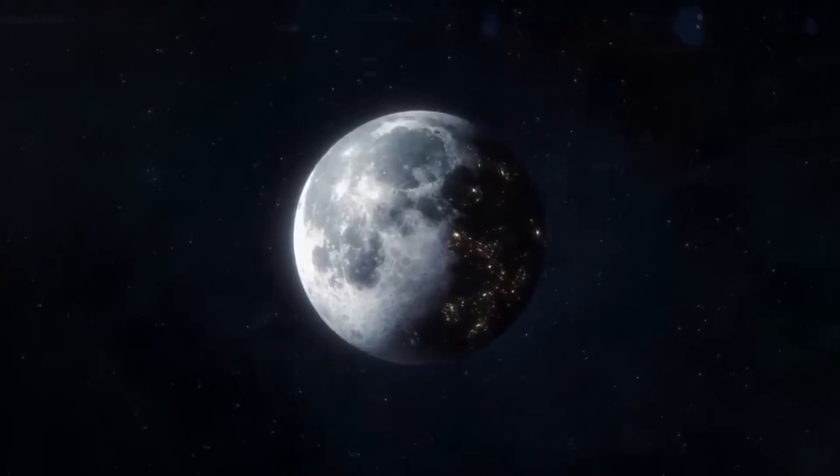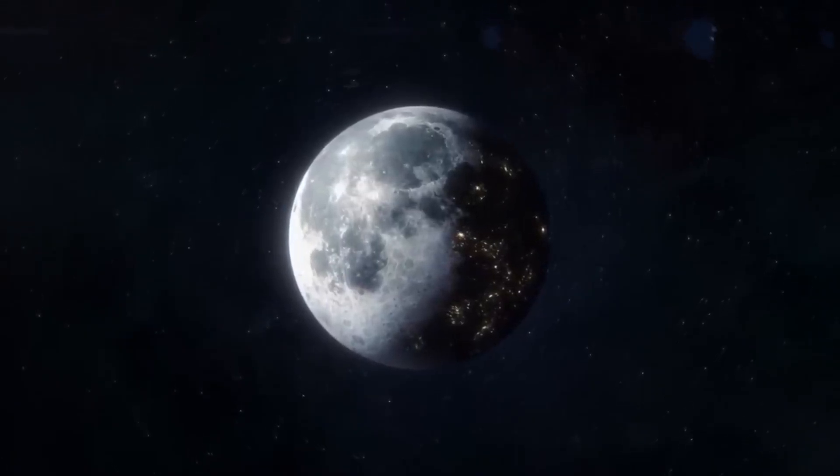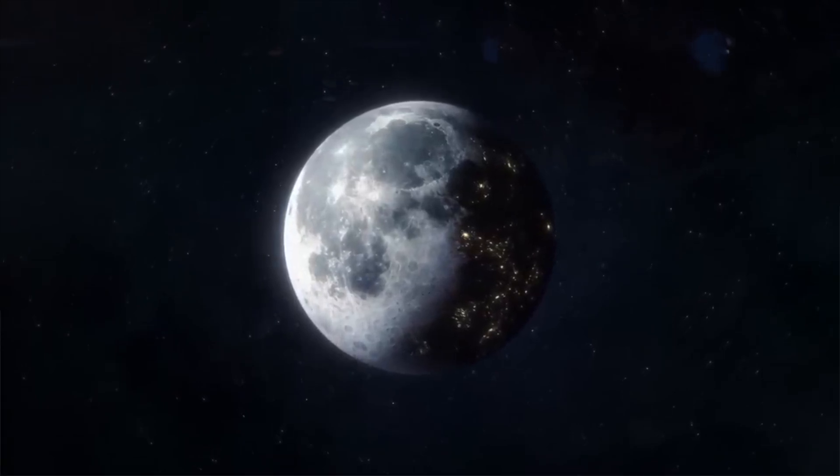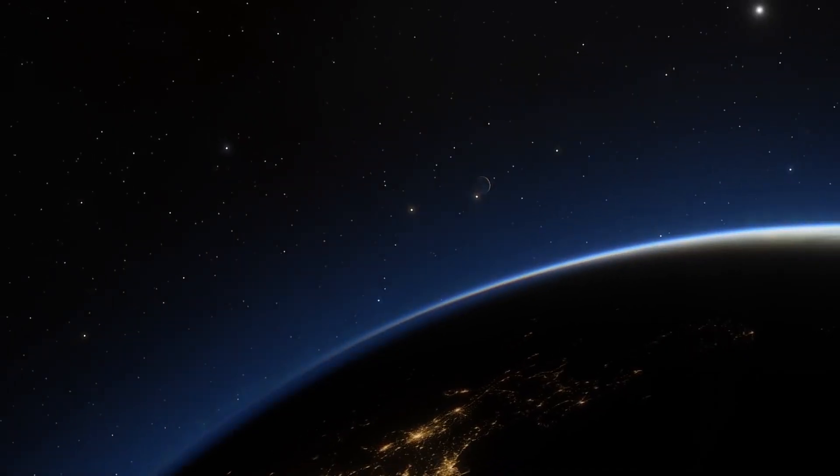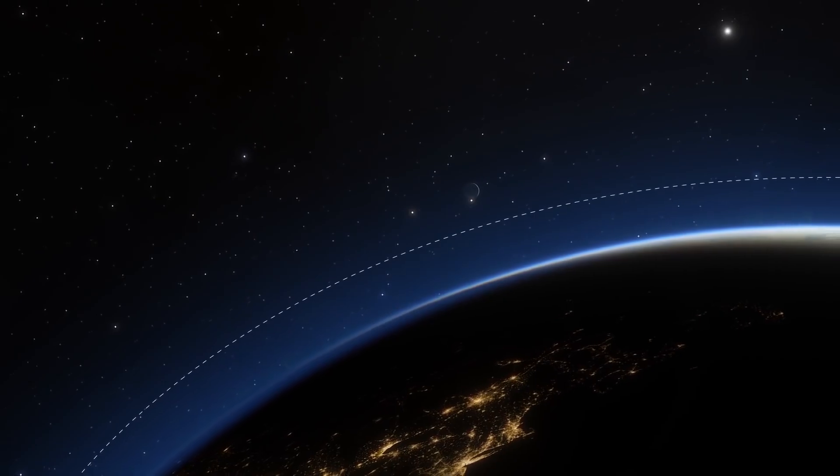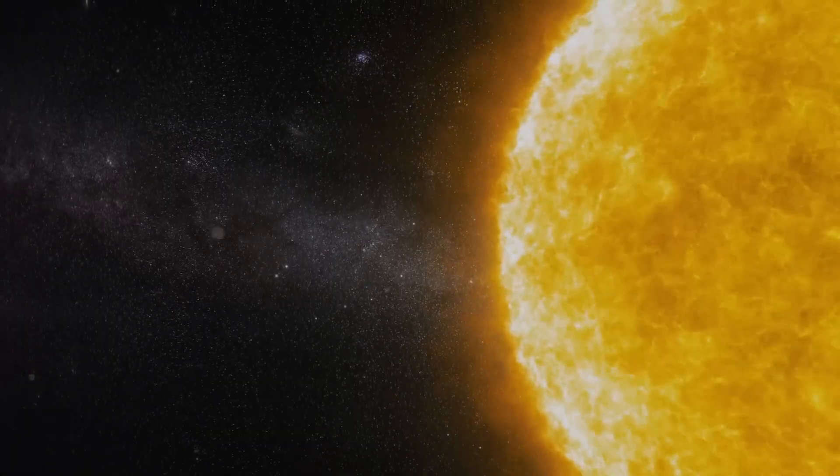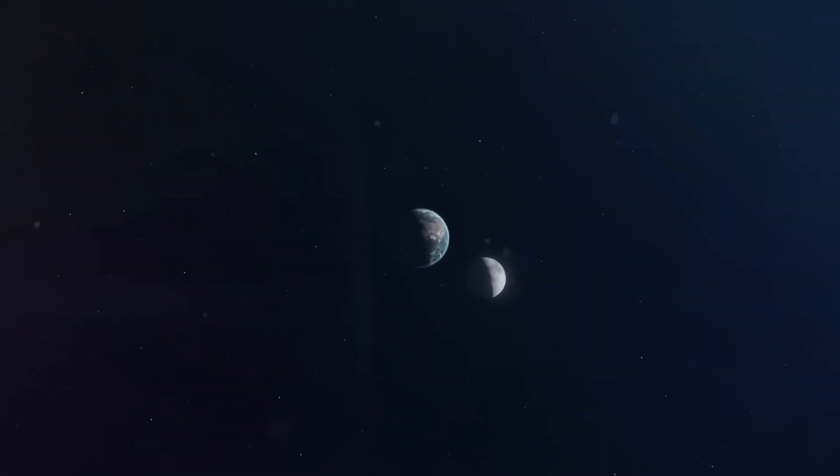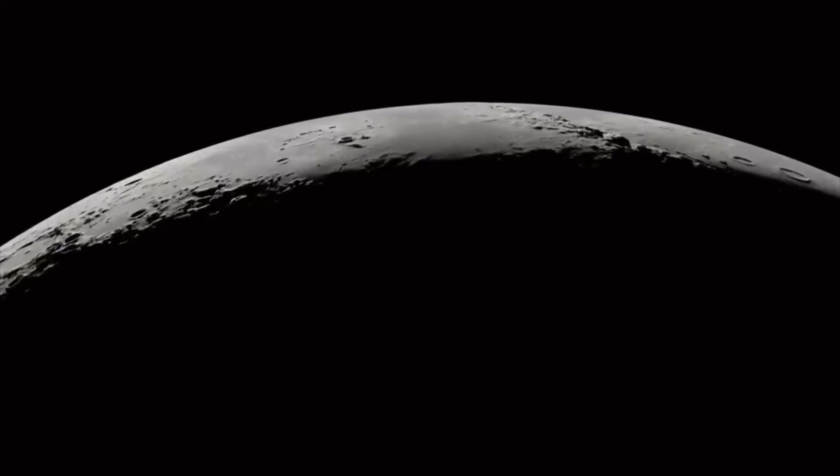And the Moon is slowly drifting away from Earth at a rate of about 1.5 inches per year. In 5 billion years, if the Sun doesn't kill both Earth and Moon, the Moon will drift away from Earth on its own journey.